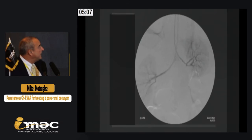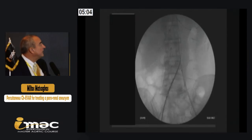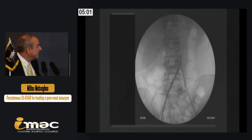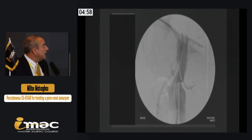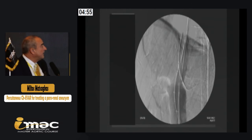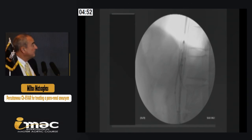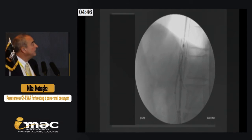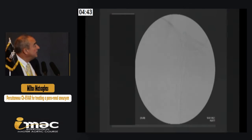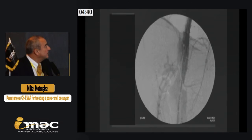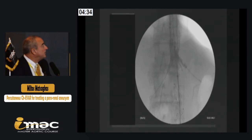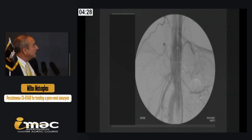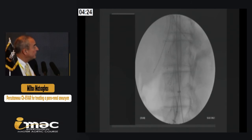The two Rosen wires are in place, confirming good position. Then the INCRAFT device is coming from the right femoral artery. You can see here the angio to define the position of the superior mesenteric artery, and opening up the aortic device with the sheaths inside the renal arteries. A confirmation angio follows — then the full opening of the device, ballooning of the stents and of the main device, and the confirmation angio confirming good placement.